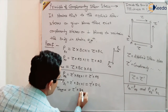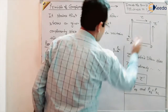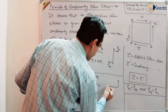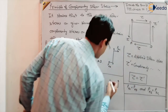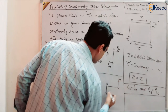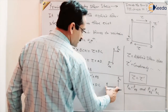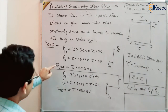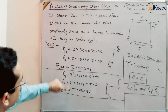So we can write: torque T2 equals tau dash times AB times BC. These are the two torques due to this condition. For static equilibrium, these two torques must be equal.